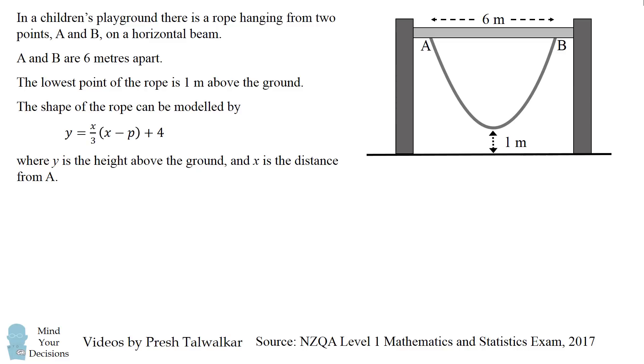The shape of the rope can be modeled by the following equation: y equals x over 3 times the quantity x minus p plus 4, where y is the height above the ground and x is the distance from A.